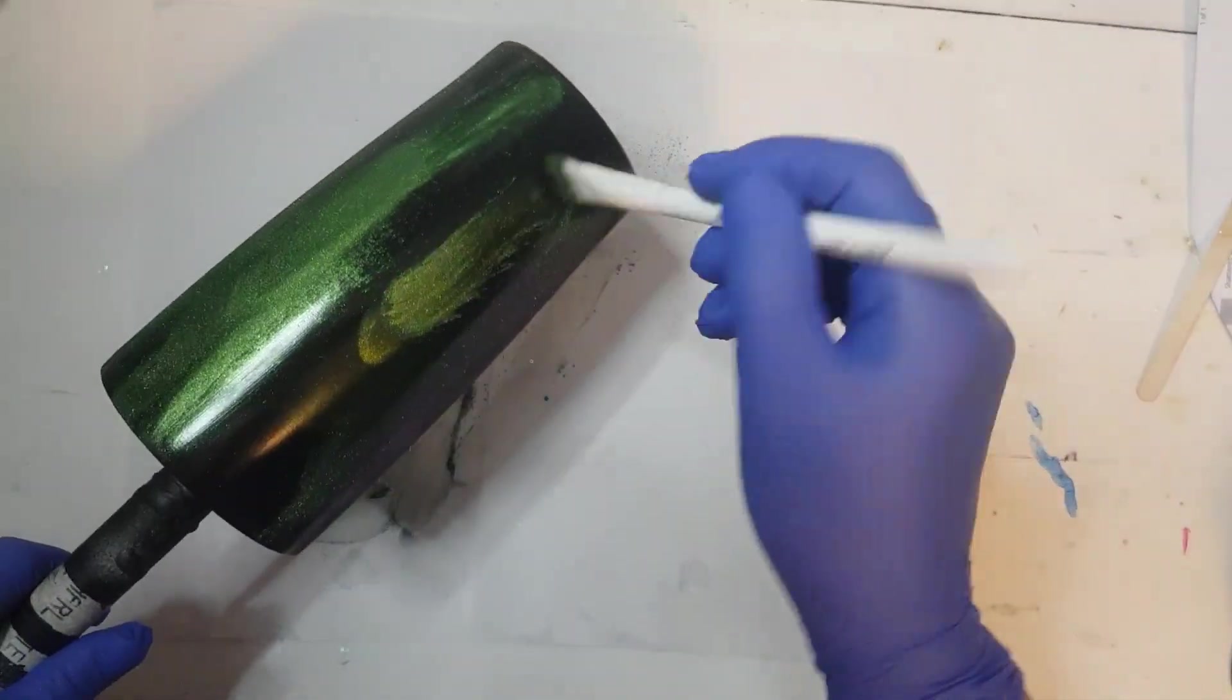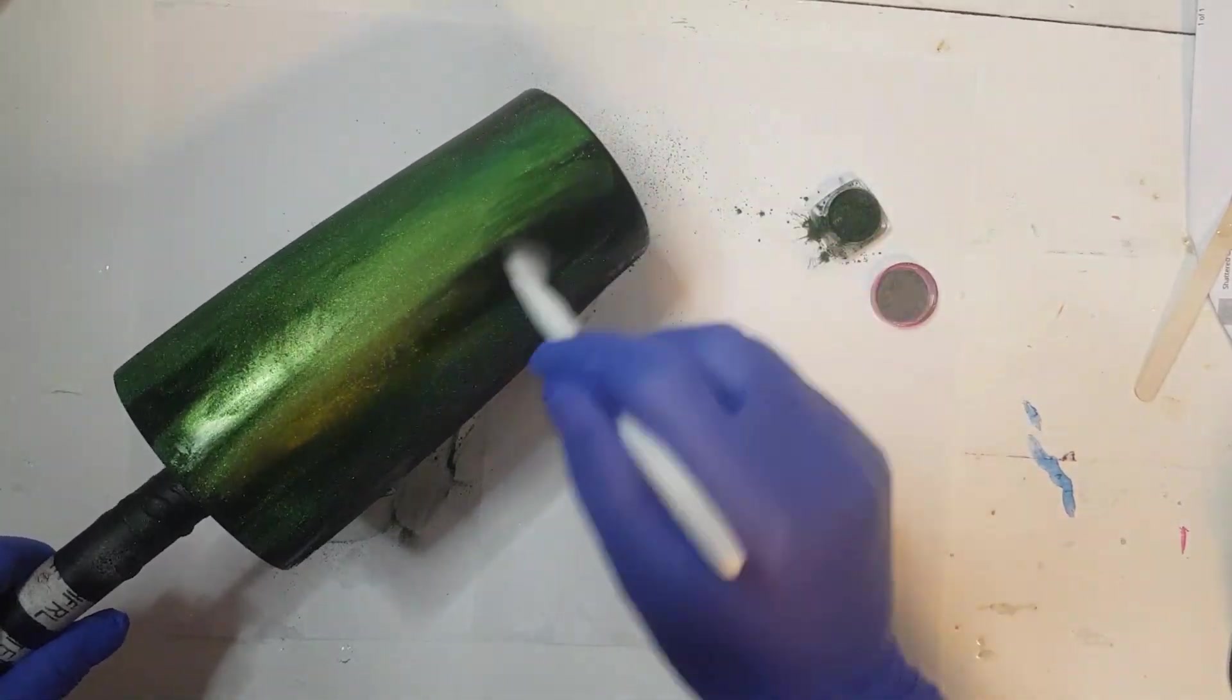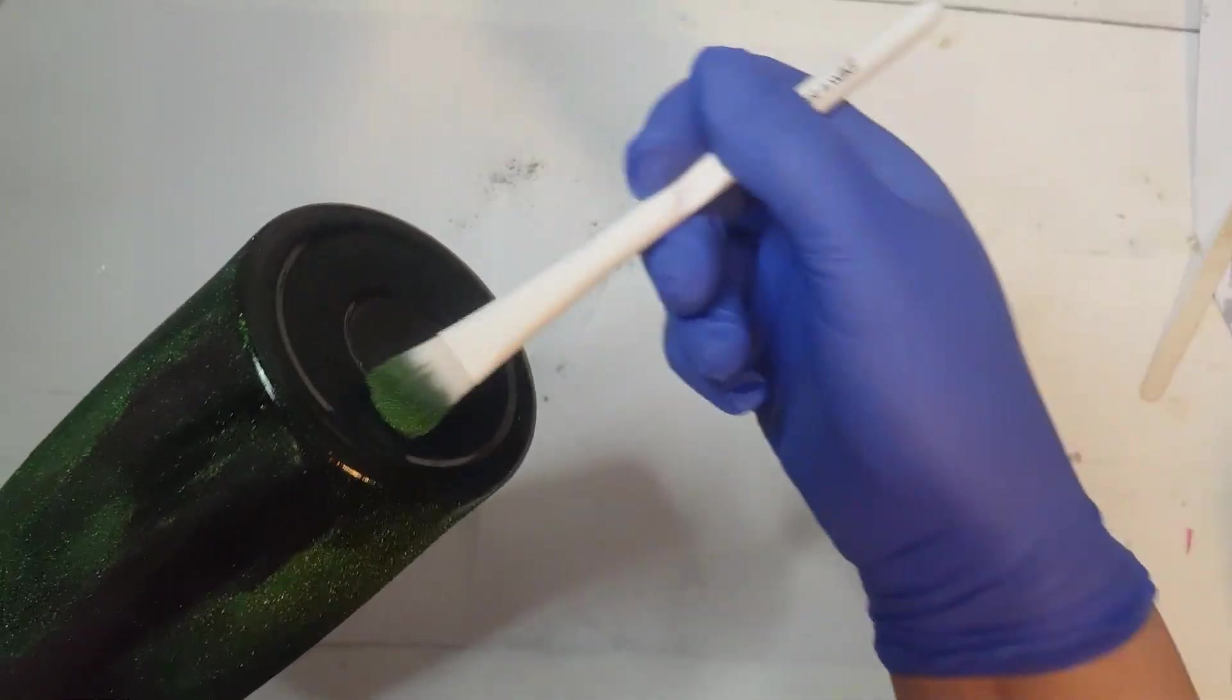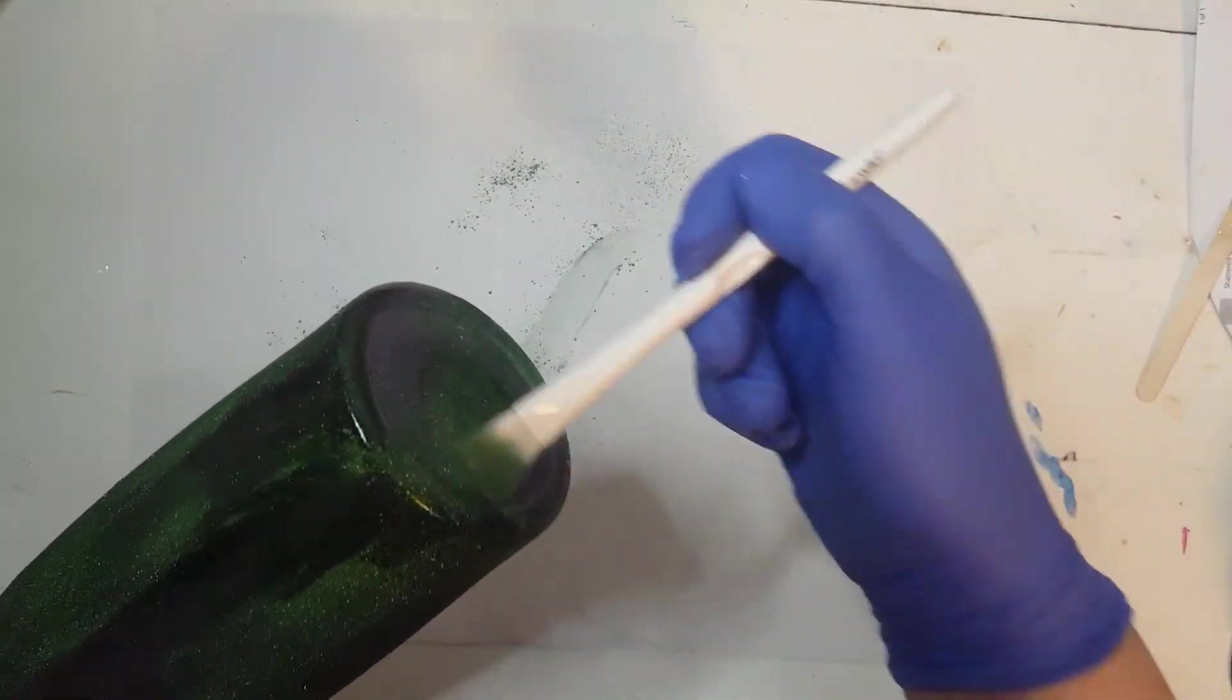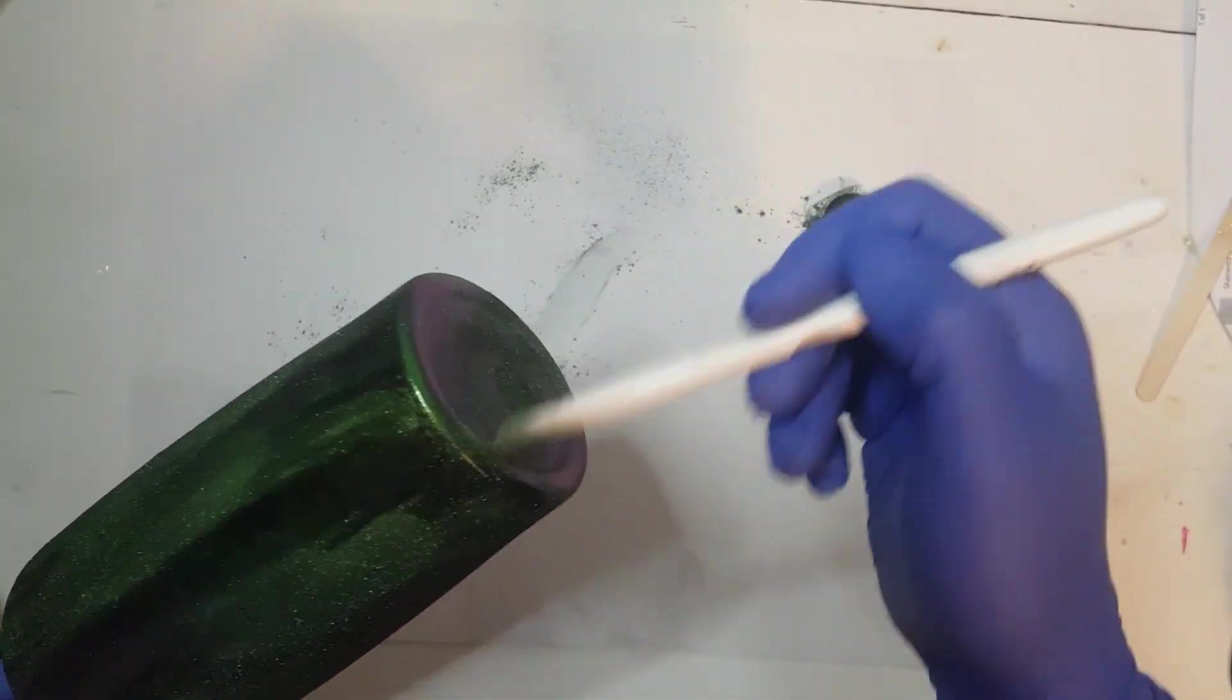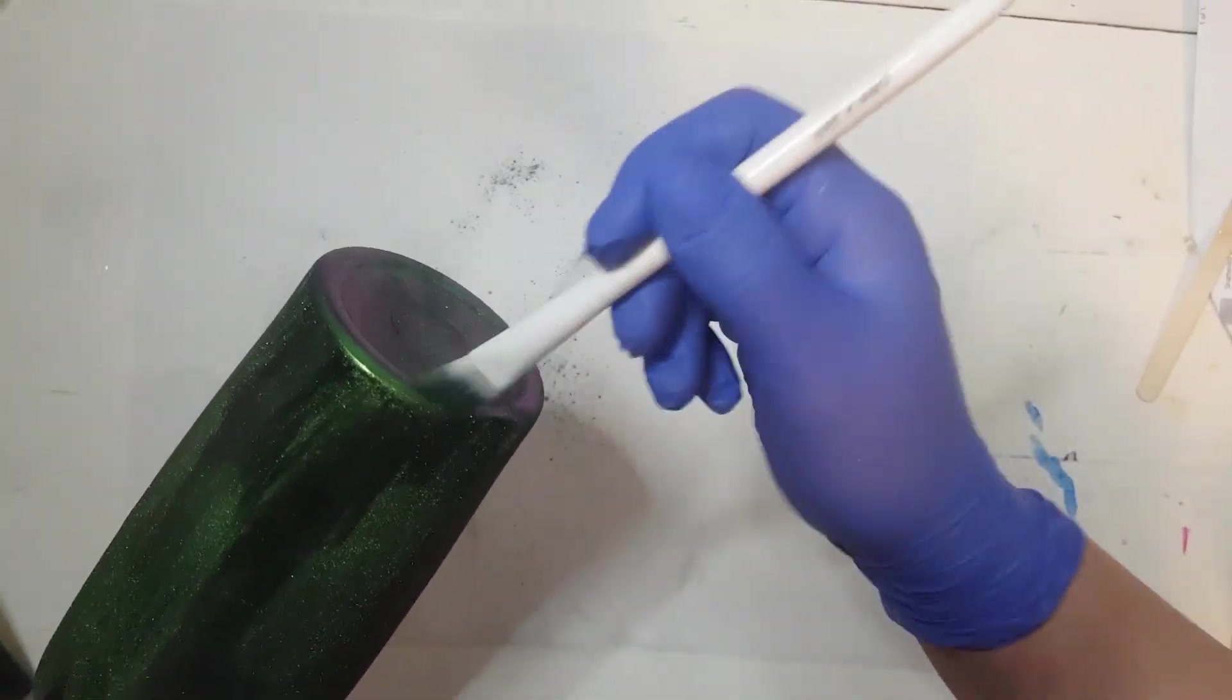But if you do a dragon scale cup this is a great coat method for that. Top coat. These chameleon flakes come in or pigments come in all different color schemes.